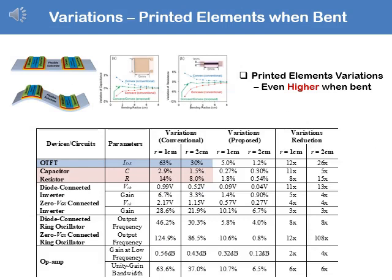Let's look at the variations of printed elements — in this case TFTs, the capacitor, and the inductor. In the table, the section in blue covers TFTs. We look at how variations increase when the substrate is bent at a radius of 1 cm versus 2 cm. The smaller the radius — meaning more bent — the more the IDS current variations increase. For the capacitor and resistor shown in pink, variations also increase when the radius is smaller, as expected.